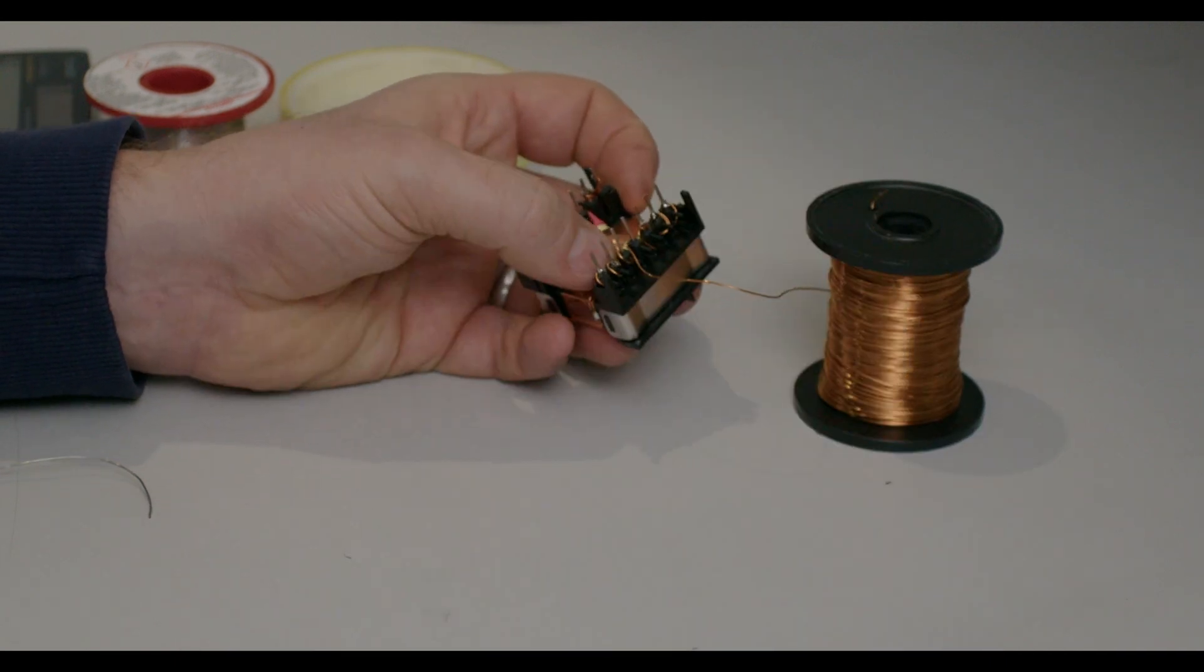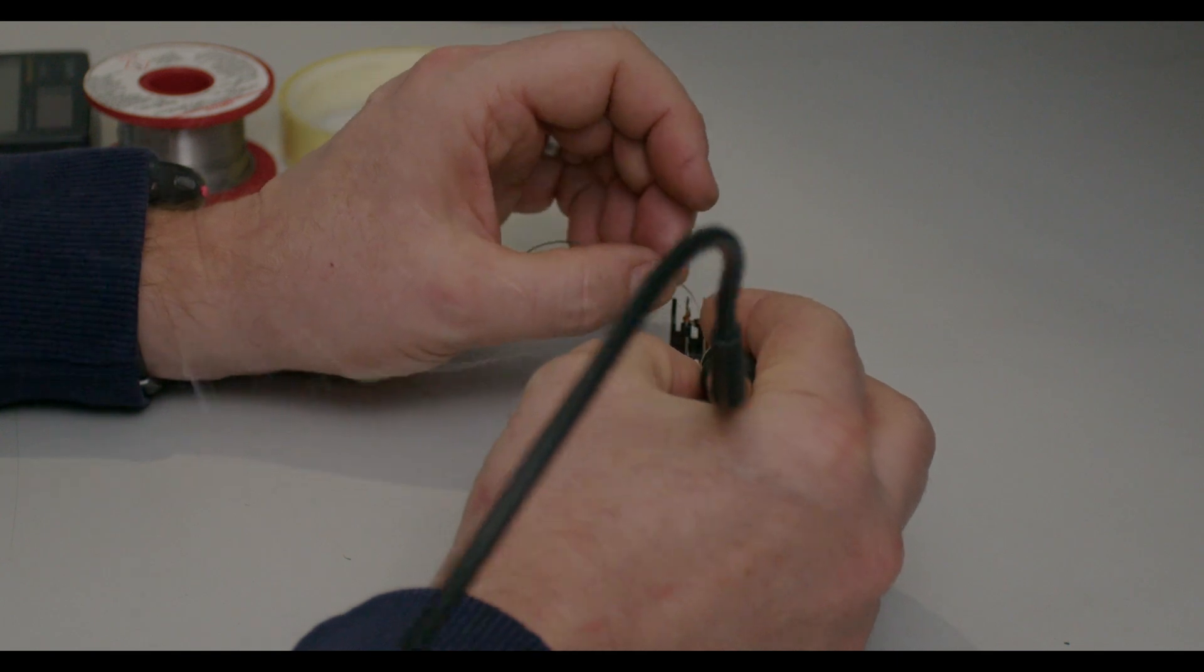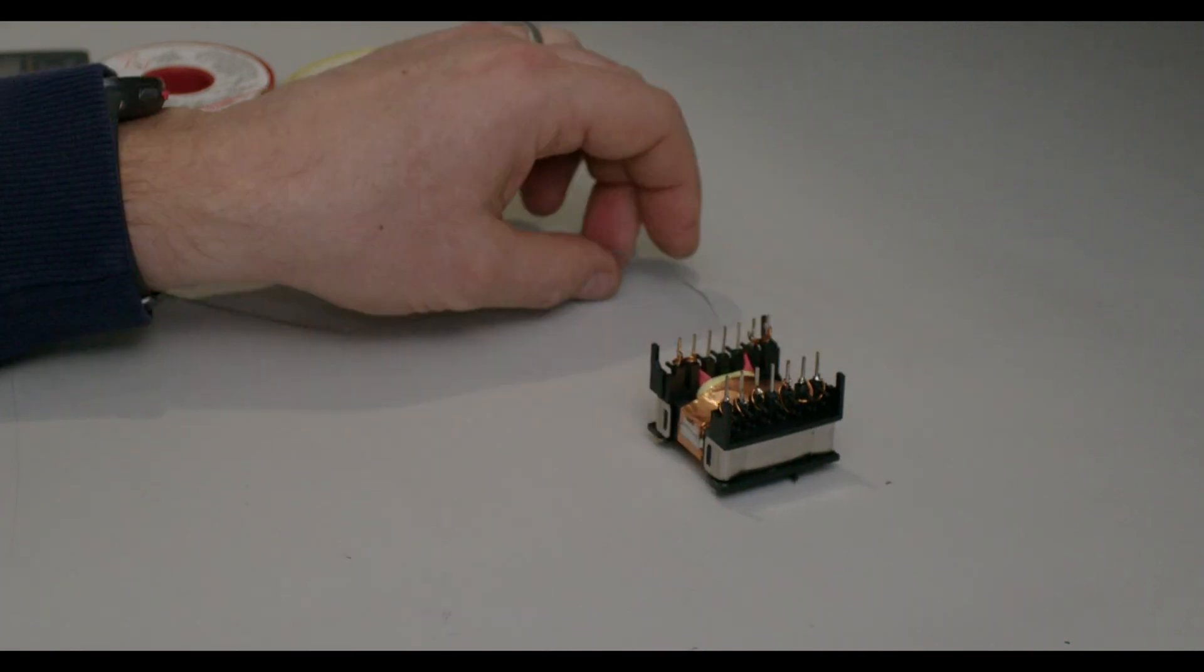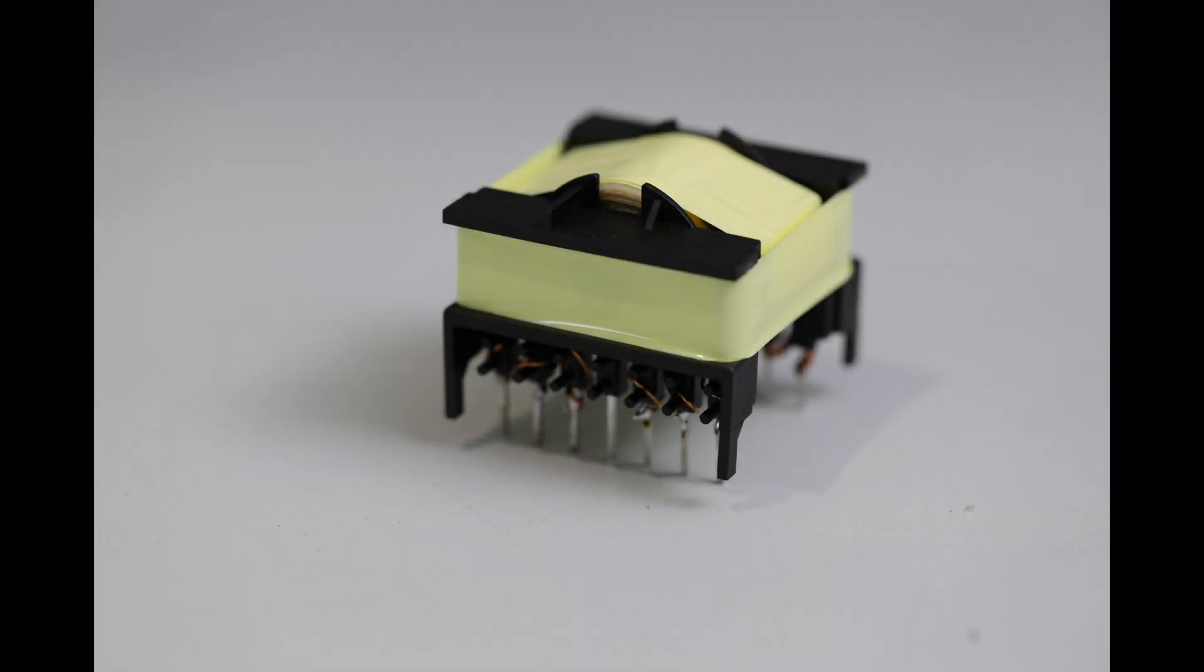Secondly, the ferrite core is conductive and the high dV/dt voltages on the windings will capacitively couple currents onto the ferrite core. By grounding the flux band back to the primary side, the noise currents are shunted back to the primary side with low impedance, which prevents the core material from radiating noise.